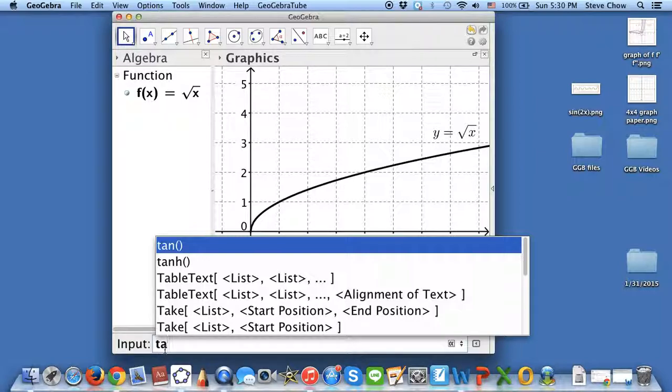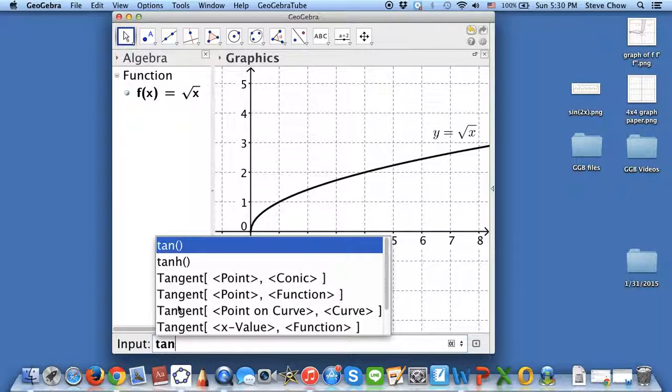You just enter TA. Then you see the tan. Or tangent or things like that. But then just continue tangent. And you have a few things that you can do. This is the usual tangent function. This is the tangent when you are given a point and a conic section. But then we are looking for the equation of tangent line.